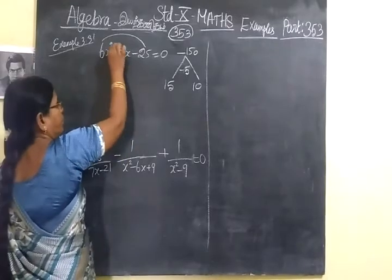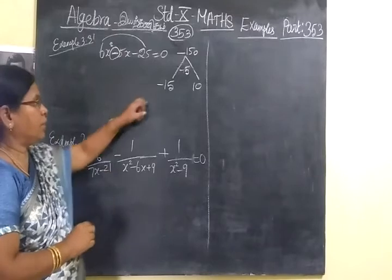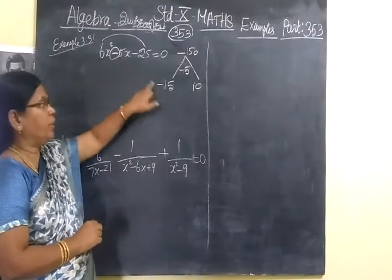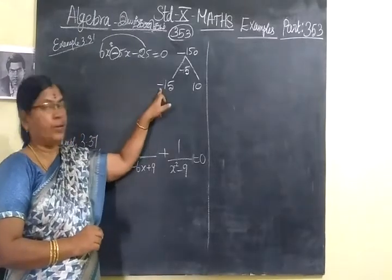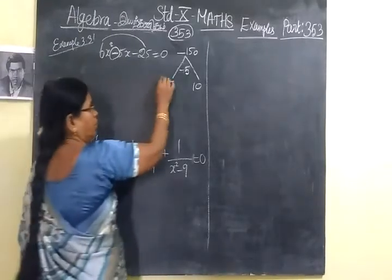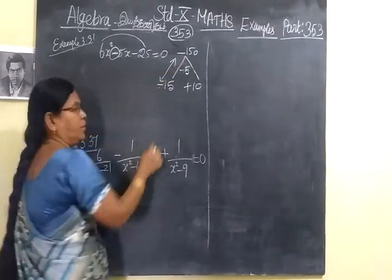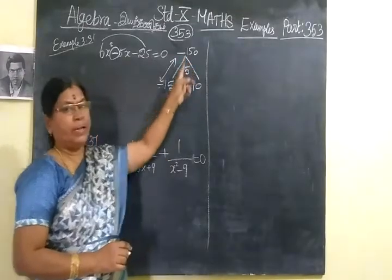If we take 15, 10, you take and write the middle term sign for the greater number. Students may commit a mistake in writing the sign. See, middle term sign you take and write for the greater number, not for smaller number. And -15 into 10. So -15 + 10 = -5. If you multiply, you are getting -150.